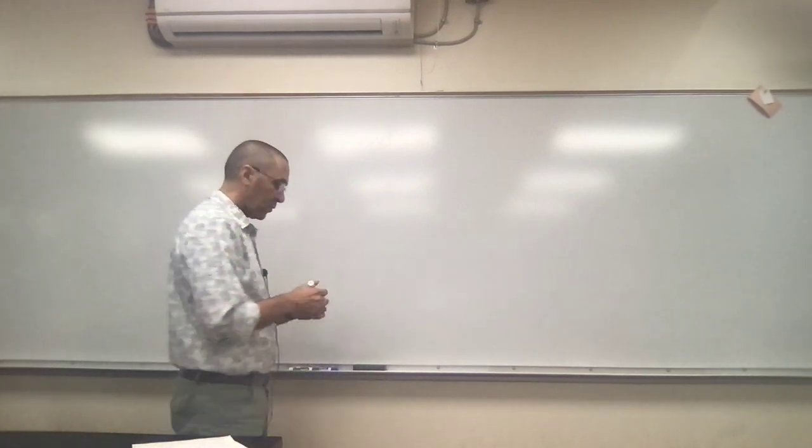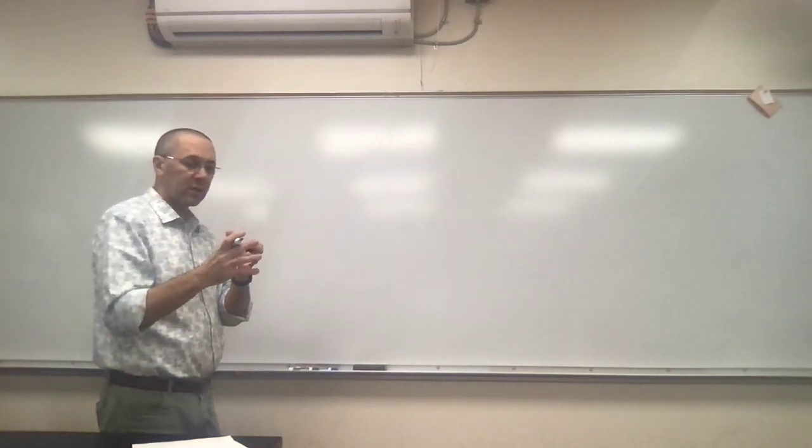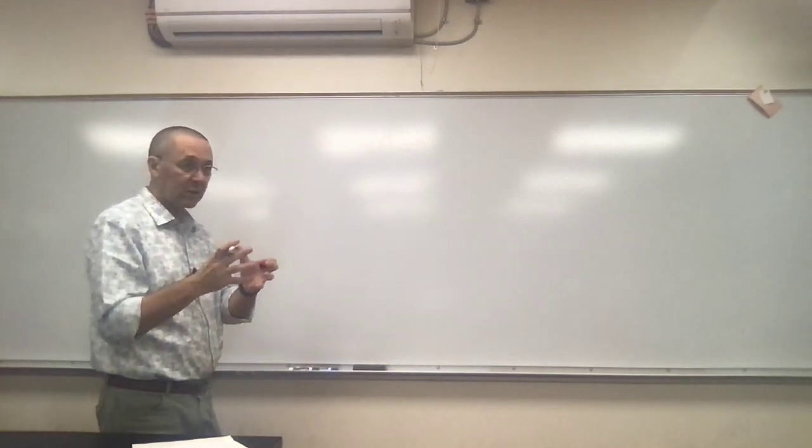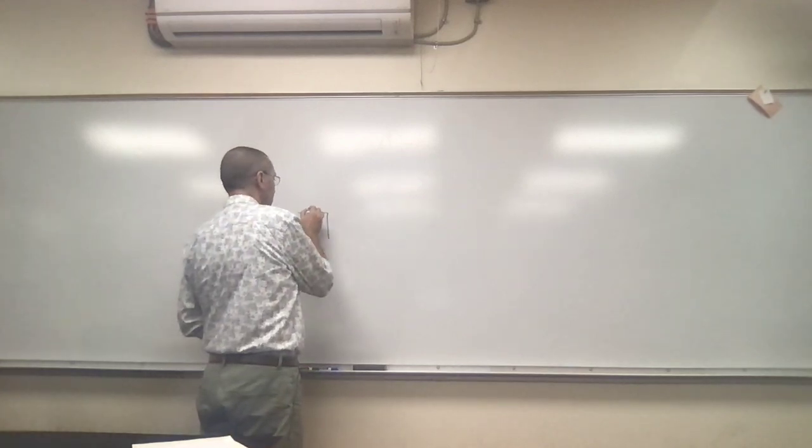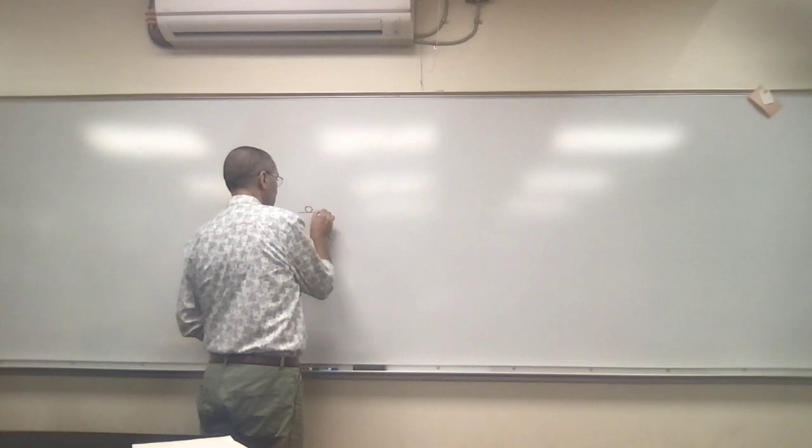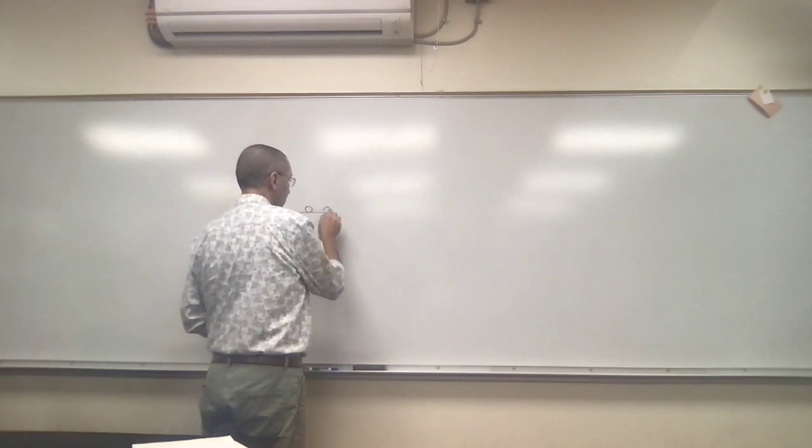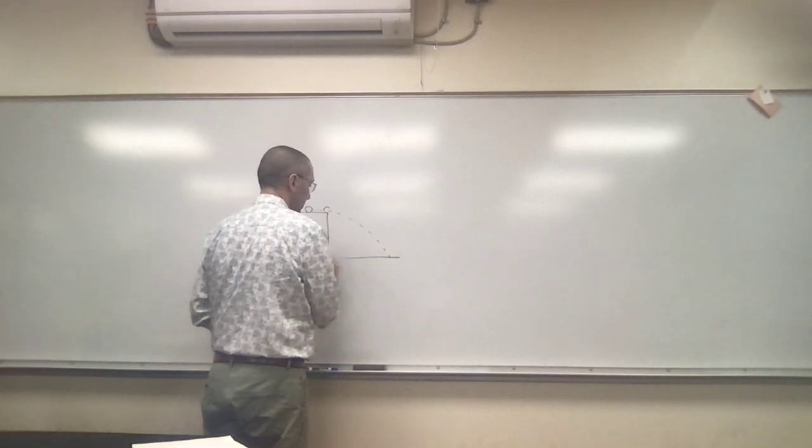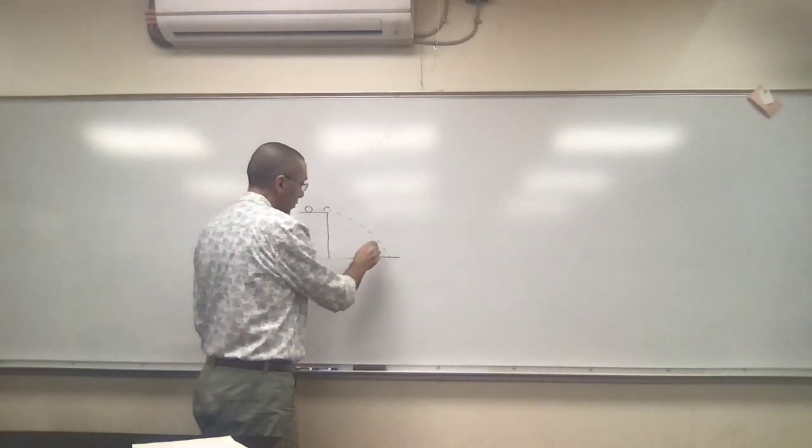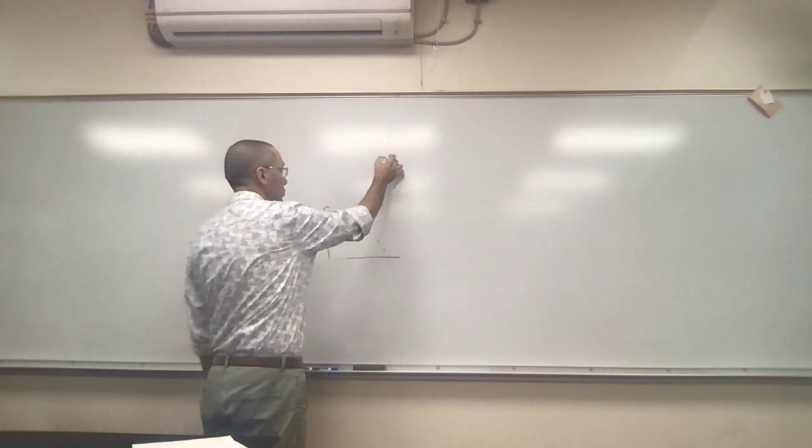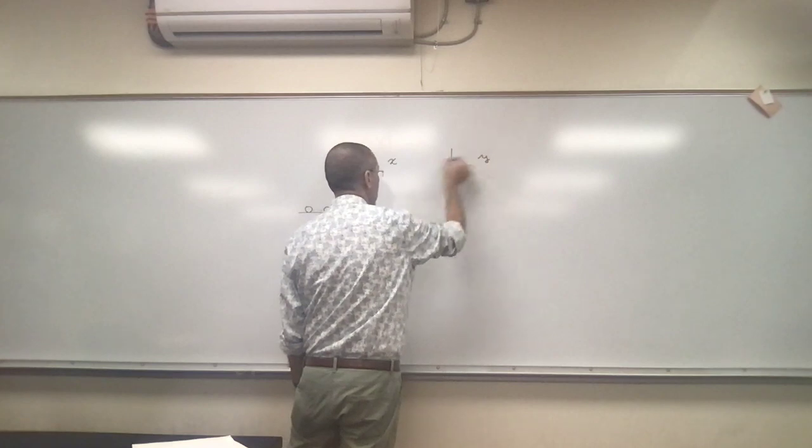So now we're going to talk about how can we describe the motion of this projectile in the horizontal direction and in the vertical direction. Let's say you have a table here and you have a ball rolling. When it comes off the table, it's going to roll like that. It's basically moving forward and down at the same time. So there are two motions. We're going to do the x and the y direction.